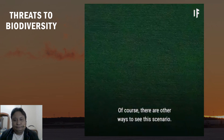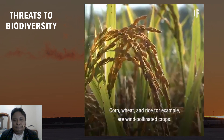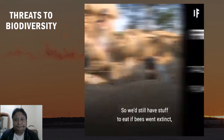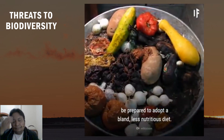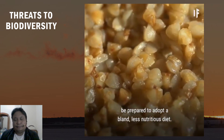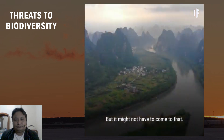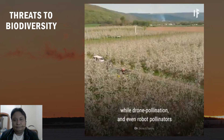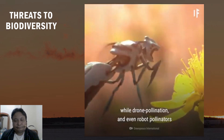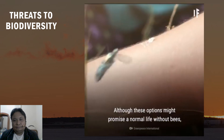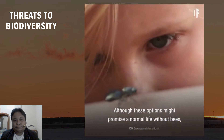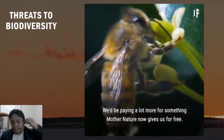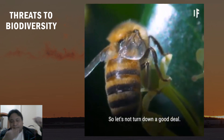Corn, wheat, and rice are wind-pollinated crops, so we'd still have something to eat if bees went extinct. But having lost most fruits and vegetables, be prepared to adopt a bland, less nutritious diet. In certain parts of China, humans have started to hand-pollinate crops, while drone pollination and robot pollinators are other avenues to consider — though these options would significantly increase costs for something nature now provides for free.